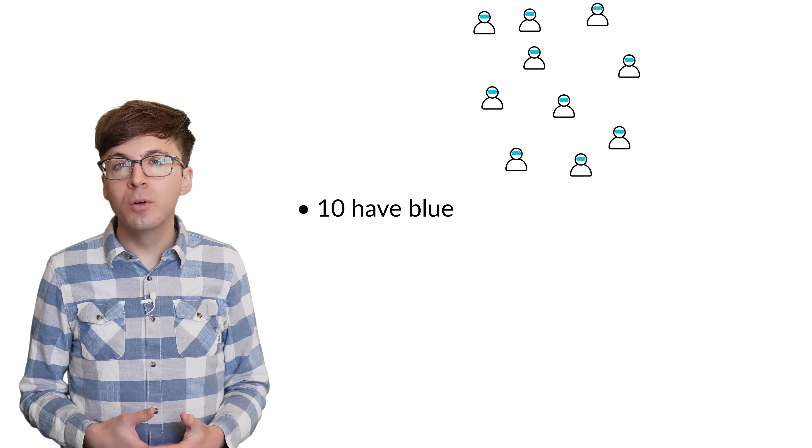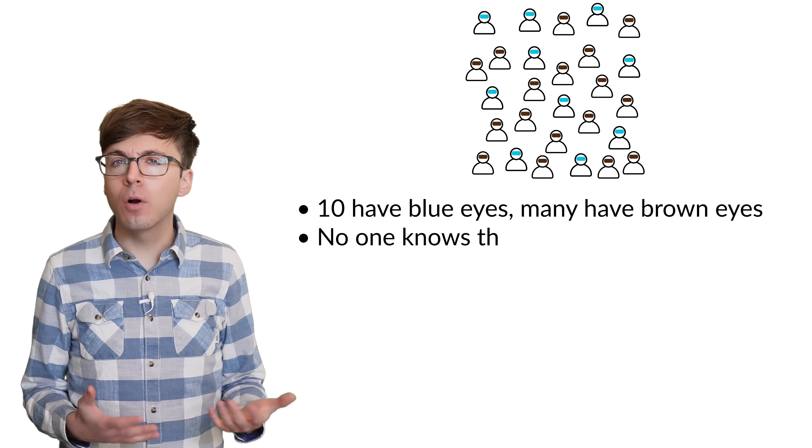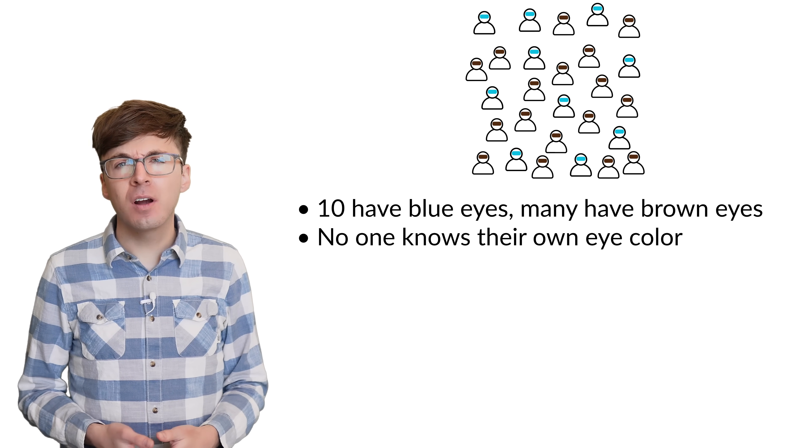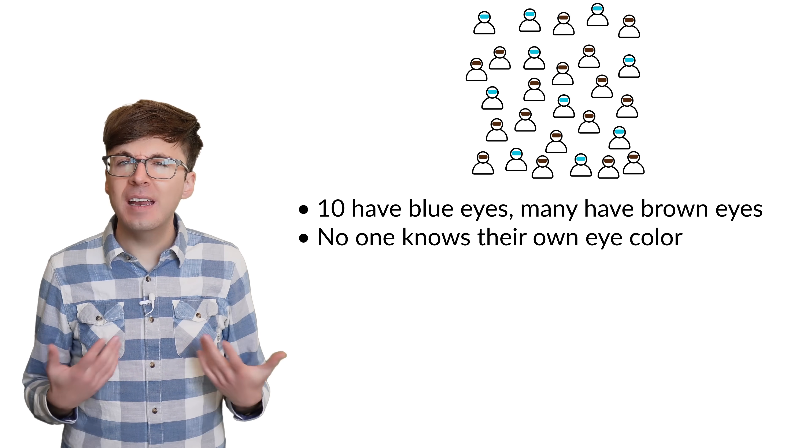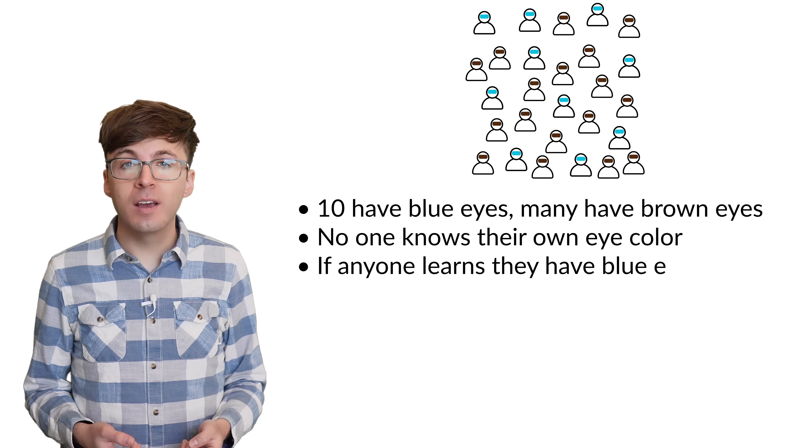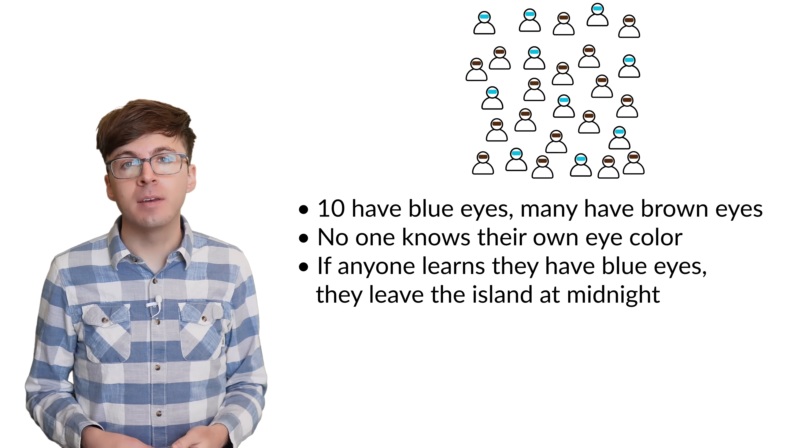On an island, there are 10 people with blue eyes and many more people with brown eyes. No one knows their own eye color, they're forbidden to talk about it, and they never look at reflective surfaces. If any islander discovers that they have blue eyes, they must leave on the ferry that comes each night at midnight.